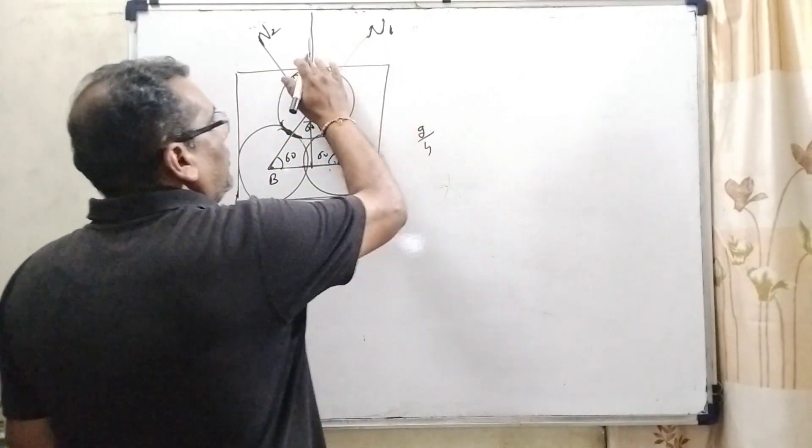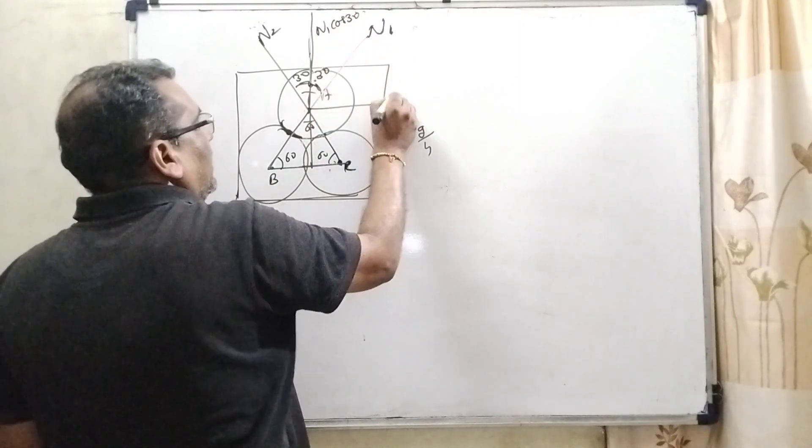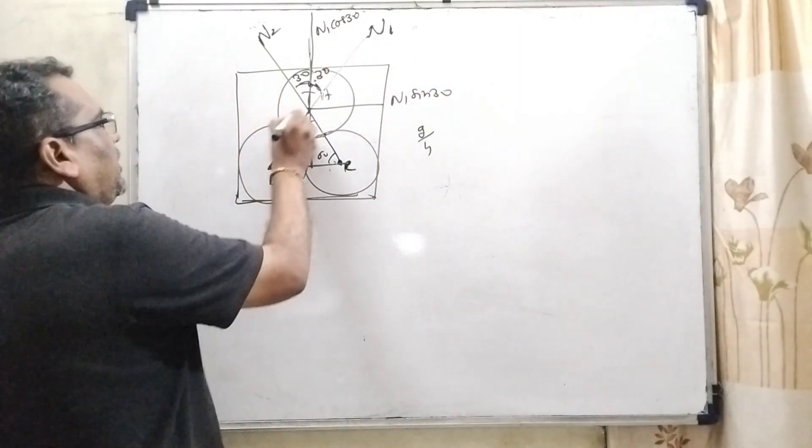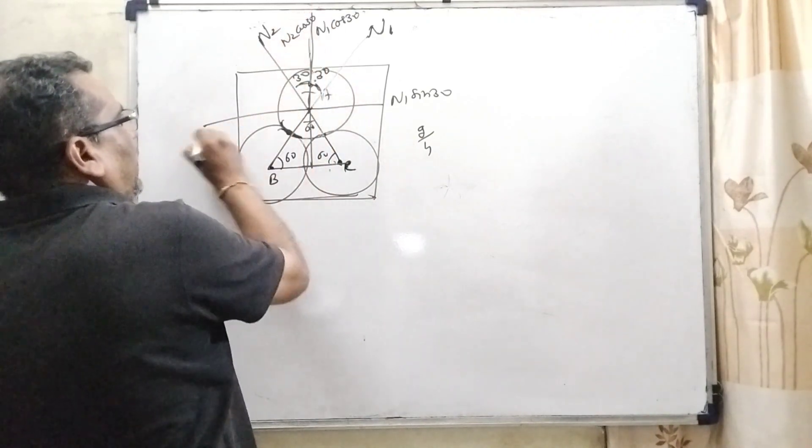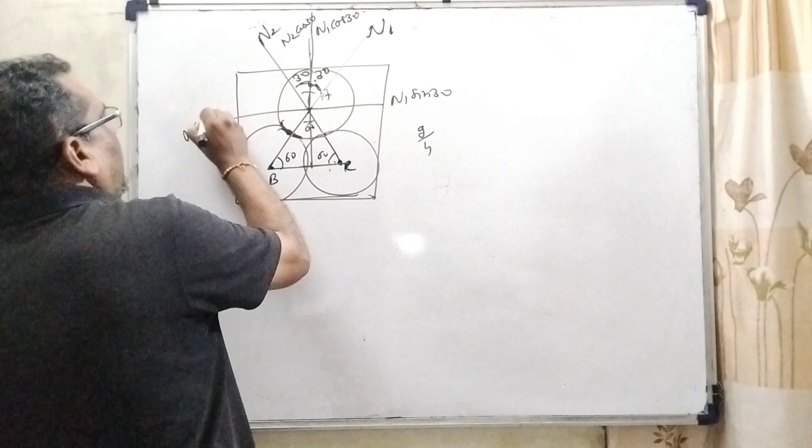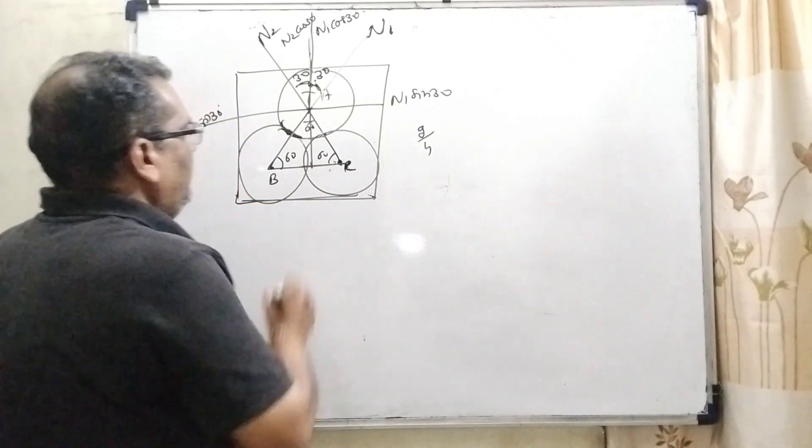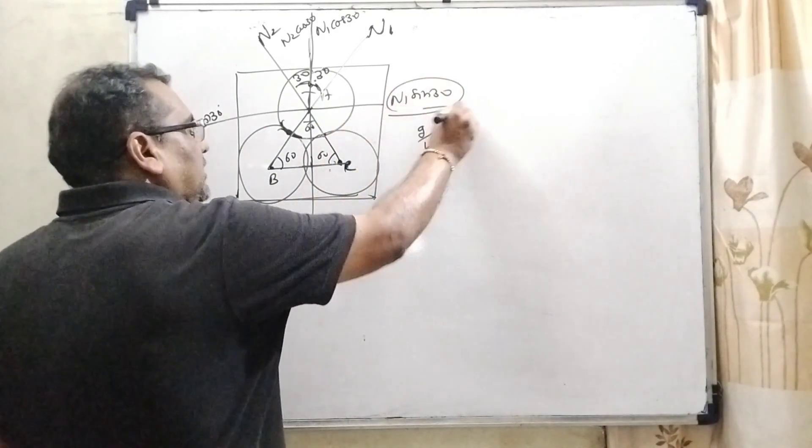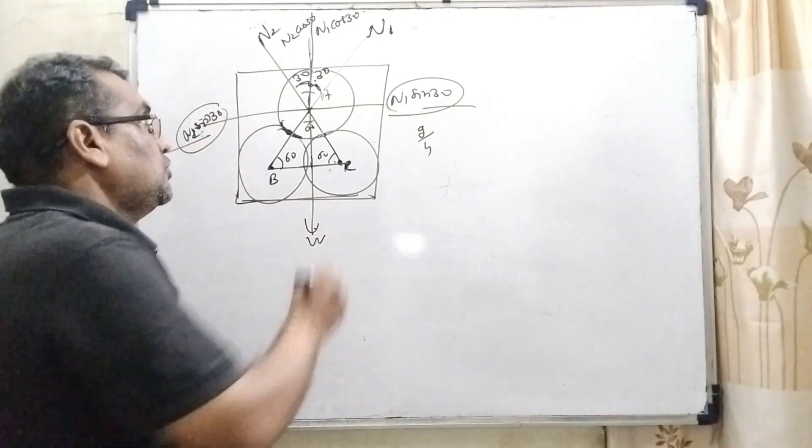So, therefore, N1 is divided into two components: N1 cos 30 and N1 sin 30, and same process doing here, N2 cos 30 and N2 sin 30. So, therefore, this is the weight, so N1 sin 30 and N2 sin 30, they cancel out.